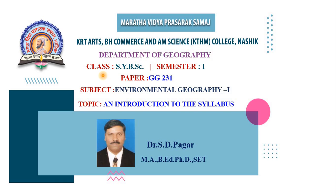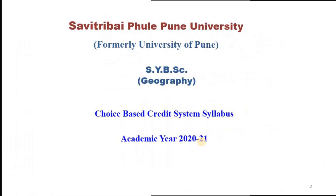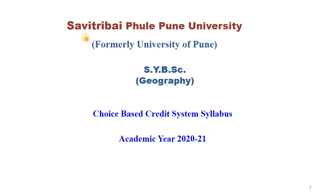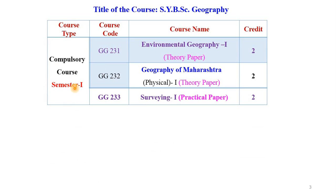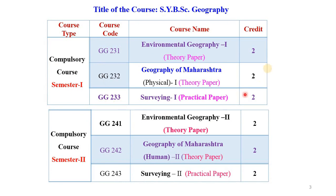Today we are going to discuss SYBSC's first paper GG231, i.e. Environmental Geography Part 1. We will start in this lecture the brief introduction of our syllabus. From this academic year 2020-21, Savitribai Phule Pune University has revised the syllabus of SYBSC's geography. Now we have a choice-based credit system syllabus. The syllabus of SYBSC is divided into two semesters, semester first and semester second. In the first semester, we have three papers.